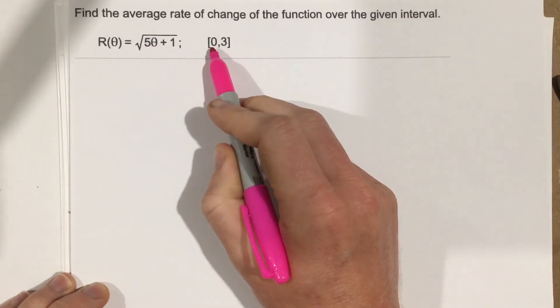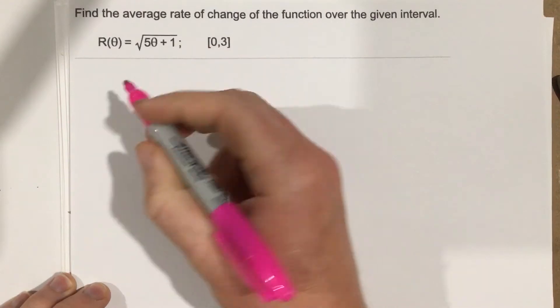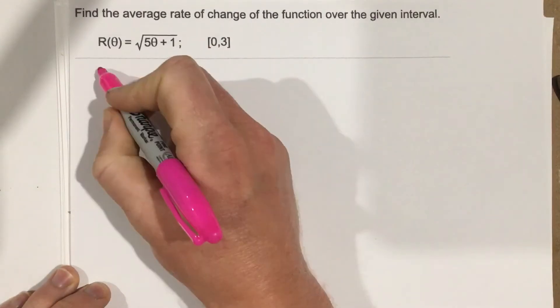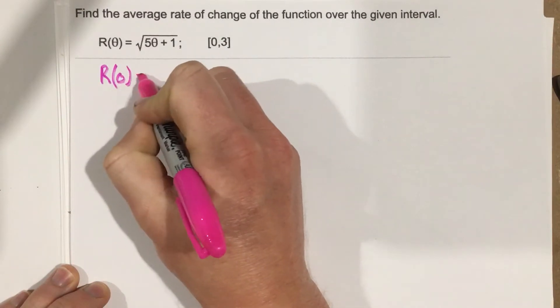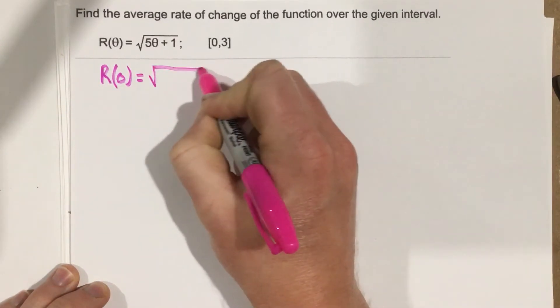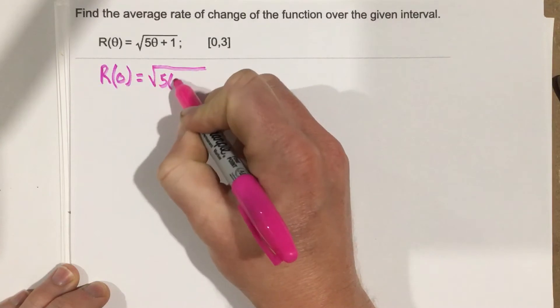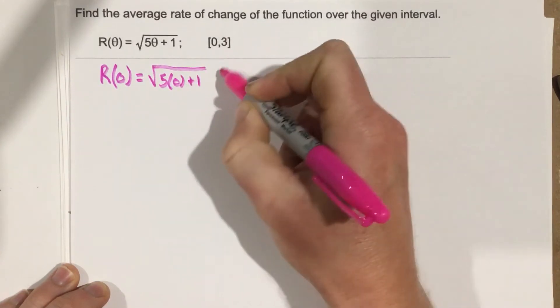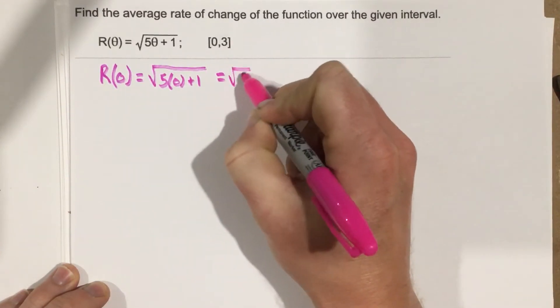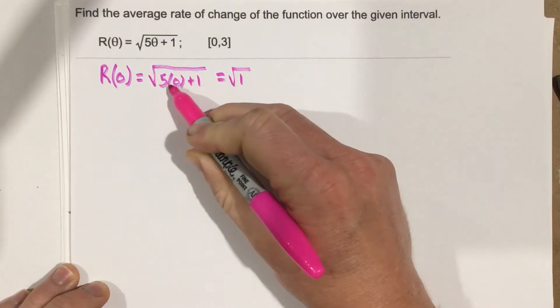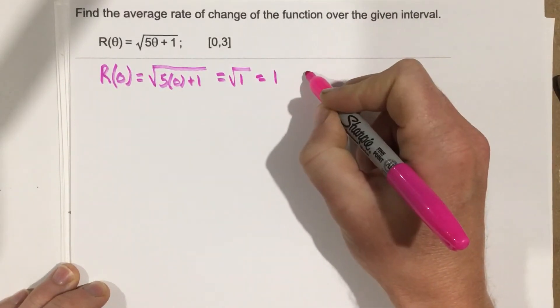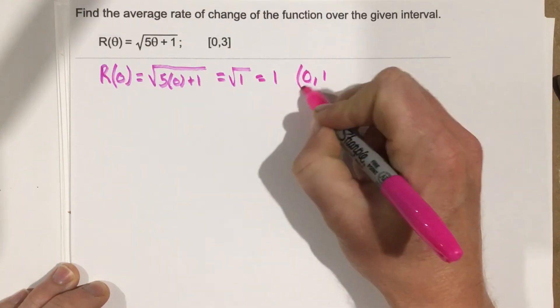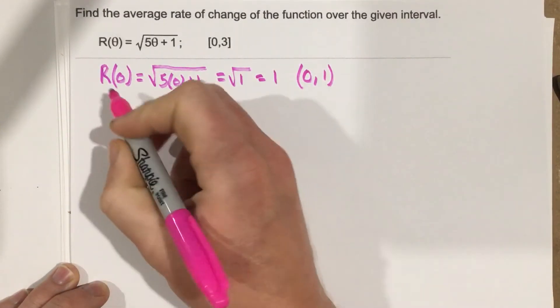And they give us 2x values 0 to 3. We need to find the y values to start. So let's go ahead and say r of 0 is going to equal root 5 times 0 plus 1. So that ends up being root 1, because this is 0 plus 1, and that's 1. So our coordinate there is 0 comma 1 for that function.